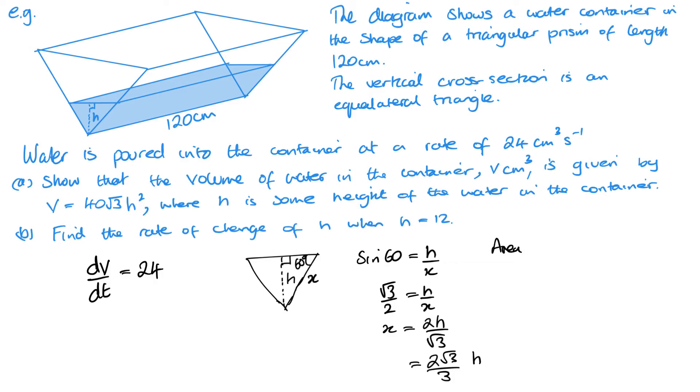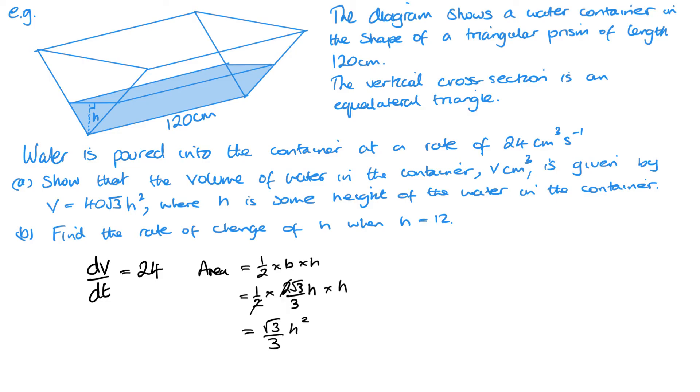Now, the area of the triangle is a half times base times height. So we've got a half times, the base is just the length of one side, as they're all the same, times the height. So you can see now, our twos are going to cancel. So we get √3 over 3H². Now, if I think about the volume, the volume is area of cross-section times length. So we've got the area, which is √3 over 3H², and the length is 120. Now, 120 divided by 3 is 40. So we get 40√3H². And that is exactly what we needed to find. So that's our first part done.